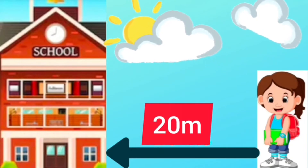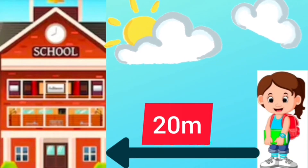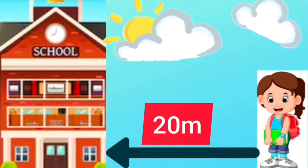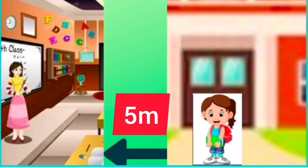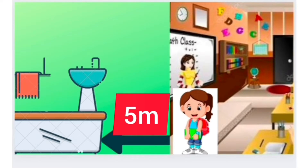Dear children, she is Kiran and she is going from her home to school. During this, she covered a distance of 20 meters. Now Kiran has reached the school and she is going to the classroom, for which she covered a distance of 5 meters. Now Kiran has reached the classroom and she wanted to wash her hands, for which she covered a distance of 5 meters.